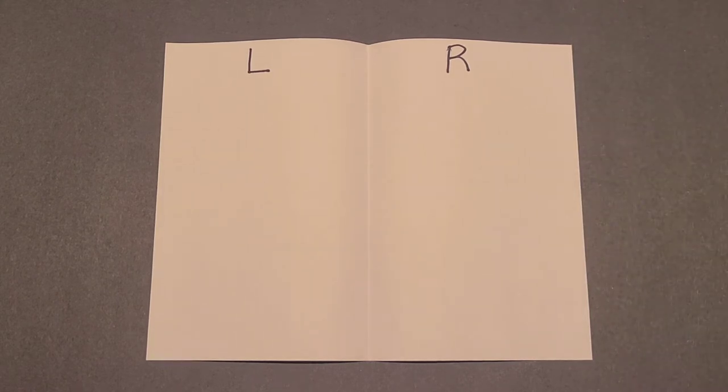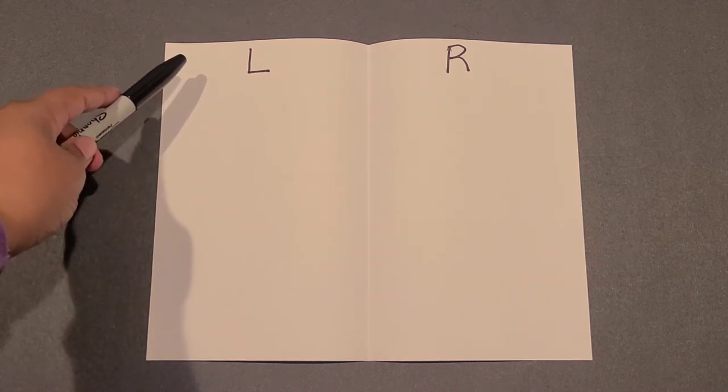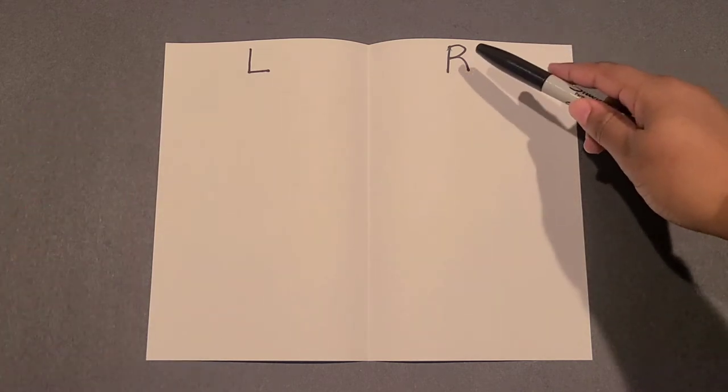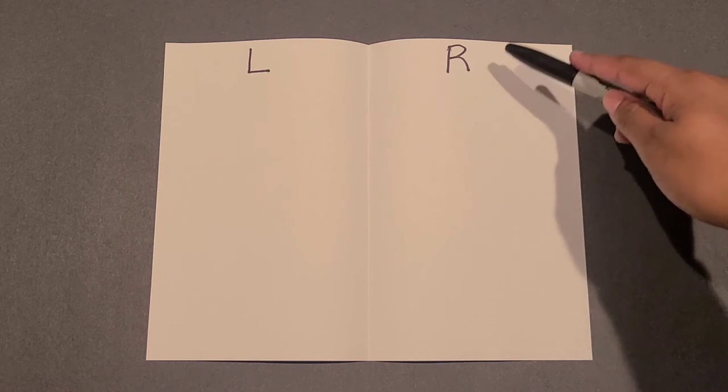You can say to the child, the L on this side of the paper means that it is the left side, while the R on the other side of the paper means that it is the right side.